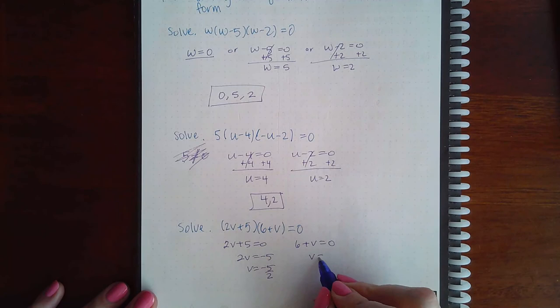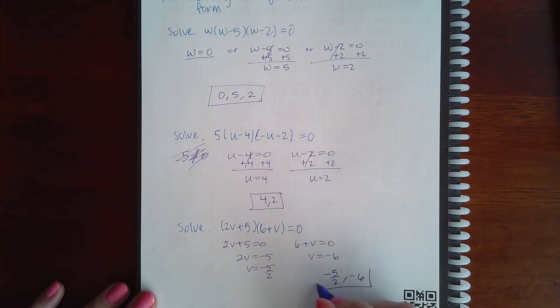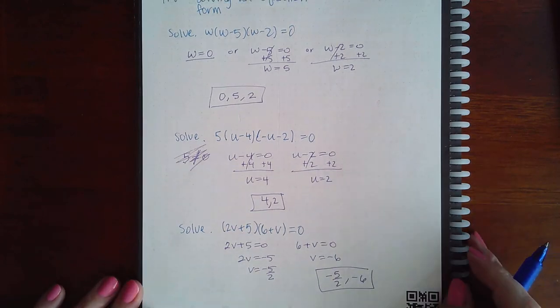Here I would minus six on both sides, and I get negative six as the other solution. So you have two solutions here to these equations.